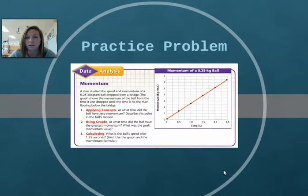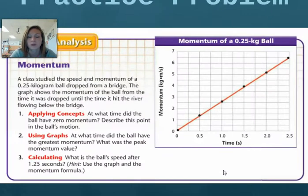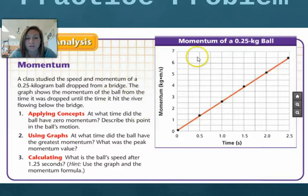Okay, so I have a practice problem for you, and on your Cornell notes, I want you to go ahead and number one through three, leave yourself a couple of spaces. The scenario says a class studied the speed of momentum of a 0.25 kilogram ball dropped from a bridge. So you're going to need to remember this scenario or envision this scenario when you answer your questions. This graph over here shows the momentum of the ball on the dependent variable from the time it was dropped until the time it hit the river flowing below the bridge.